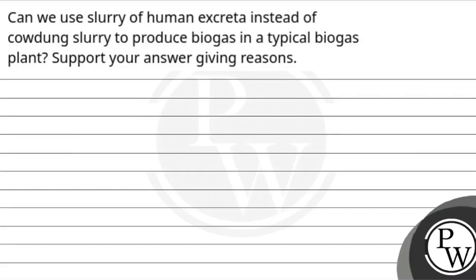Hello, kids. Let's see the question here. The question says: Can we use slurry of human excreta instead of cow dung slurry to produce biogas in a typical biogas plant? Support your answer by giving reasons. This is asking about biogas production — can we use human excreta instead of cow dung slurry to produce biogas in a typical biogas plant?